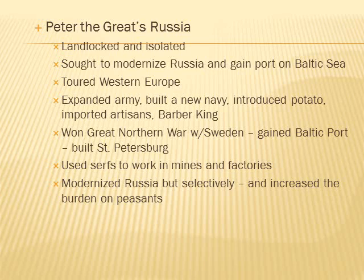Peter the Great's Russia had been landlocked and isolated. Peter the Great sought to modernize Russia and gain a port on the Baltic Sea. He toured Western Europe to get ideas about modernization. He expanded the army, built a new navy, and introduced the potato which helped increase the population. He imported craftspeople and artisans. He was also known as the barber king because he made aesthetic changes — he wanted the Russian nobility to look more European, so he made them cut off their beards or pay a beard tax. He would literally cut beards off himself at parties.